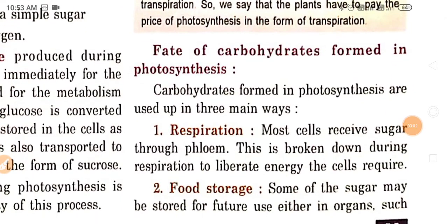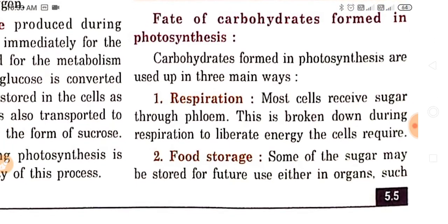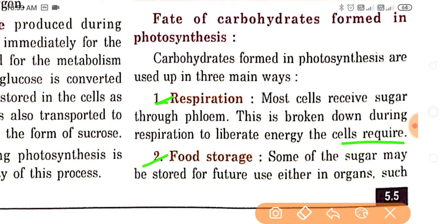Regarding the fate of carbohydrates formed in photosynthesis: carbohydrates formed in photosynthesis are used up in three main ways. First is respiration — most cells receive sugar through the phloem. This sugar is broken down during respiration to liberate energy that the cells require.